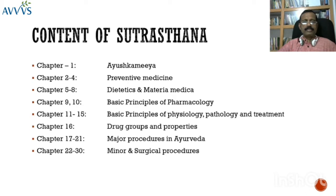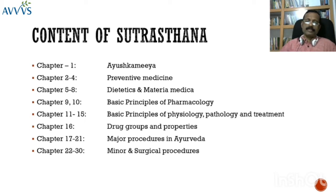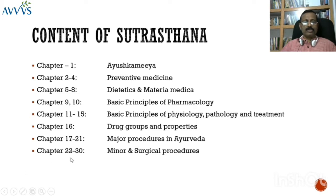From chapter 17 onwards up to chapter 30, there is a description of different procedures in Ayurveda, including Panchakarma — the five purificatory procedures — preparation of the patient, method of administering Panchakarma, and related rules. From chapters 17 to 21, major procedures are dealt with, and from chapters 22 to 30, some minor and surgical procedures — the theory and principles behind surgery — are described. That is the total content of Sutra Sthana.